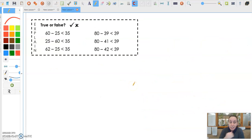If we have a look at this one, just a little extension, I hope you've had a good go at it. If not, do it now. Pause the video and I'll go through the answers now. So, true or false? So the first one, 60 minus 25 is 35. Because they're both 35, it should be an equal sign, not a less than sign. So that is false.